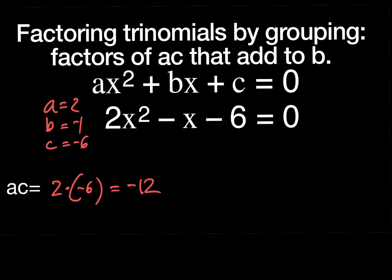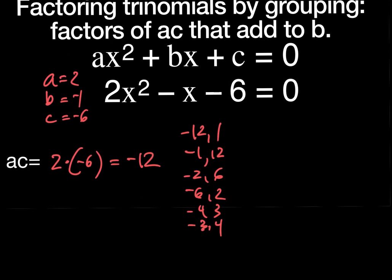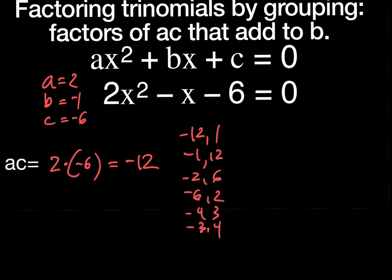Procedurally, I have to think of the factors of a·c that add up to b. First I find a·c: two times negative six is negative twelve. Then I think of the factors of negative twelve — what numbers multiply to negative twelve and eventually add to b. So: negative twelve and one, negative one and twelve, negative two and six, negative six and two, negative four and three, negative three and four.